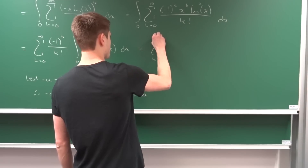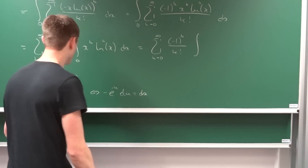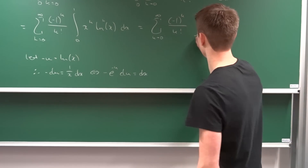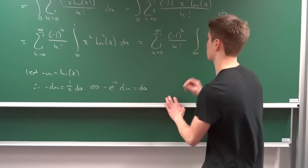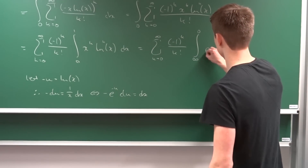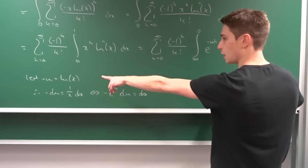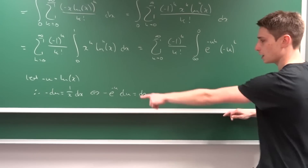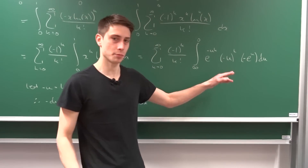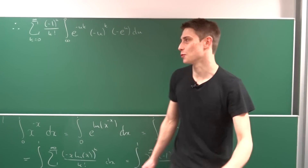Plugging everything in, we get the infinite sum from k equals 0 to infinity of minus 1 to the kth power over k factorial, times the integral. The lower bound is now infinity and upper bound is zero. We have e to the minus u times k, then minus u to the kth power, and dx is minus e to the minus u du. Importantly, don't forget to distribute the kth power also into this minus one.